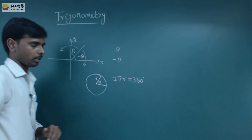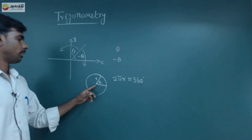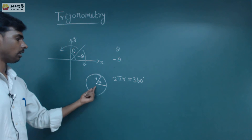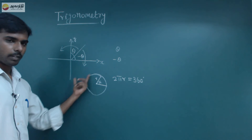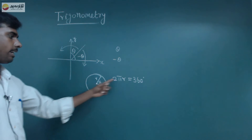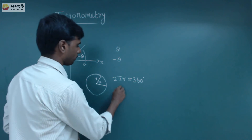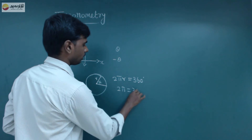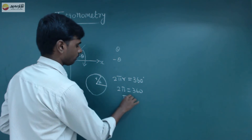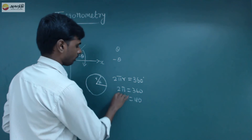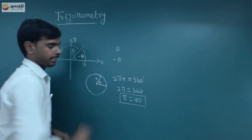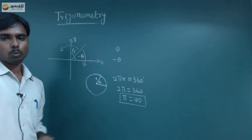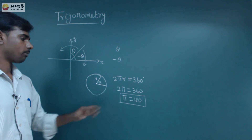The full rotation of a circle is 360 degrees. If we have a unit circle where the radius is 1, then 2π equals 360. That means π equals 180. Using this, we can calculate radians with the formula π equals 180.